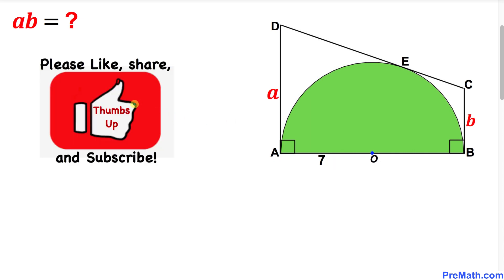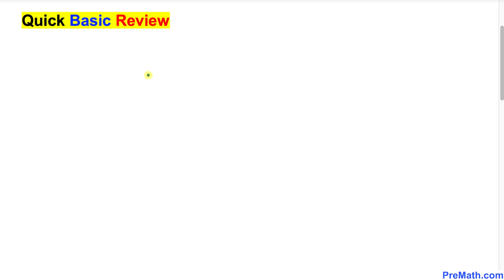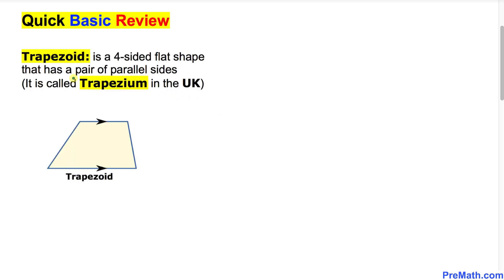Please don't forget to give a thumbs up to this video. Let's go over the basic review. A trapezoid is a four-sided flat shape that has a pair of parallel sides, as you can see in this figure.